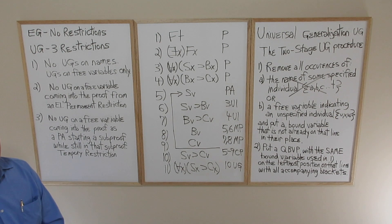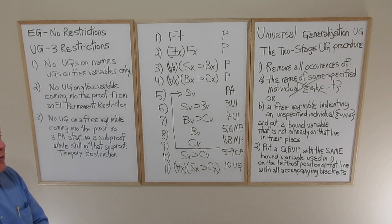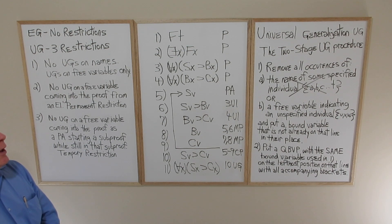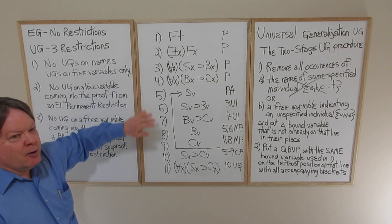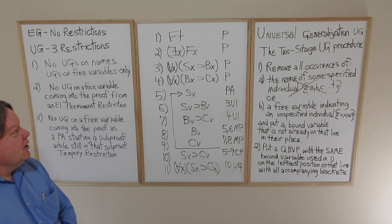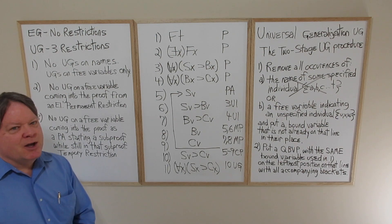That gives us our four quantifier rules: UI and EI for removing quantifier bound variable pairs, and EG and UG for putting them on. From here we move on to the quantifier negation rule.